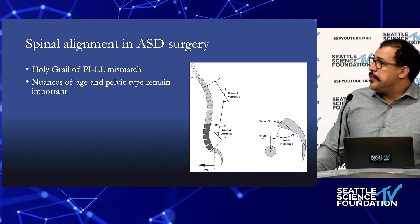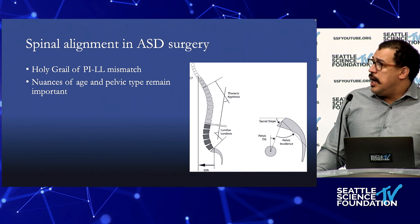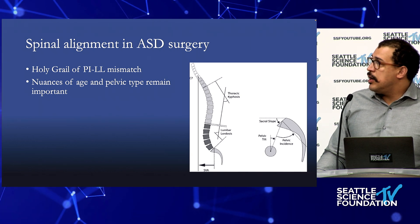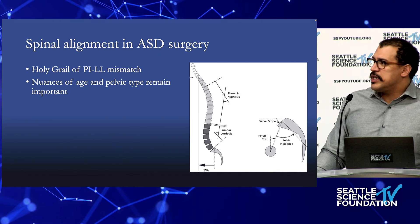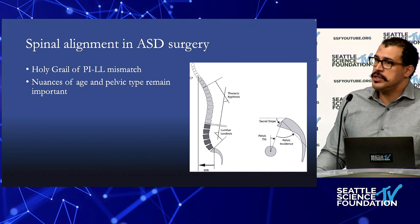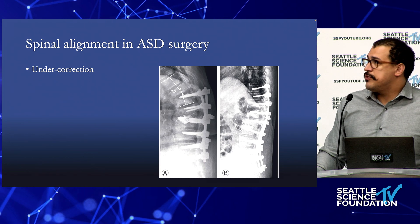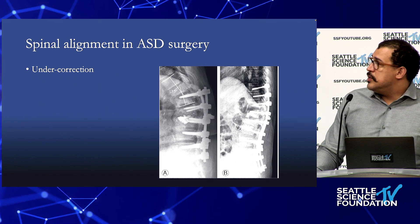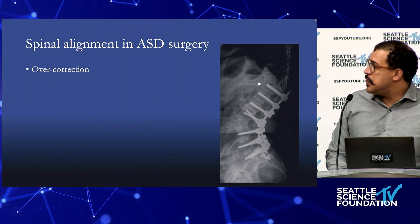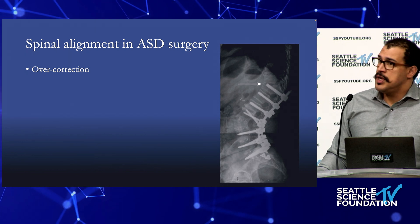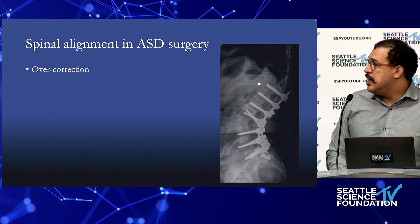Alignment is probably one of — if not the most — important factors. The holy grail of PI-LL mismatch and pelvic incidence are very important, and as we understand this better — whether you believe in age-matched alignment — we don't yet have a perfect understanding of how aggressive a correction each patient needs. Clearly, under-correcting or over-correcting patients increases the risk for proximal junctional failure. Under-correction puts significant stress at the proximal junction requiring revision and extension, while an over-aggressive PSO creates too much stress at that proximal level — both are risk factors.